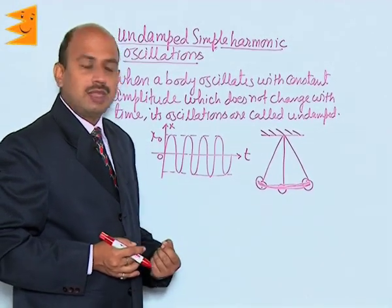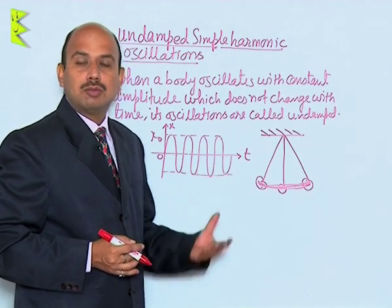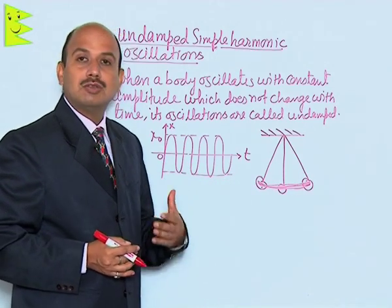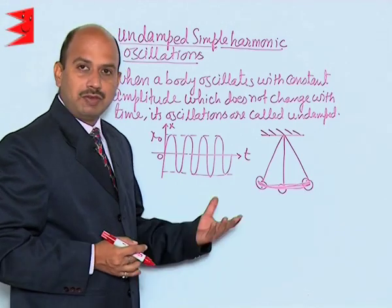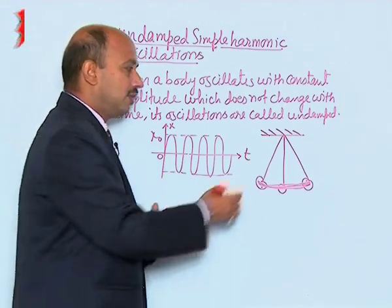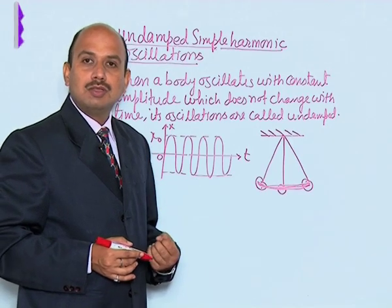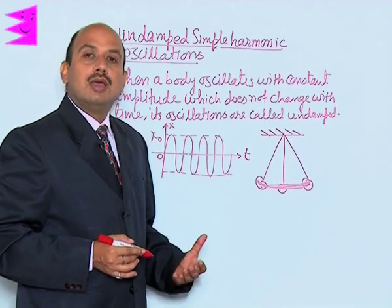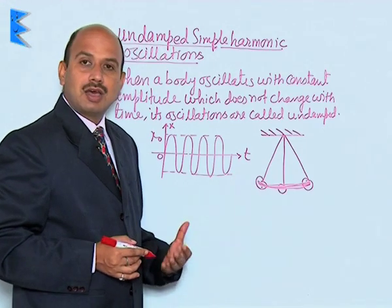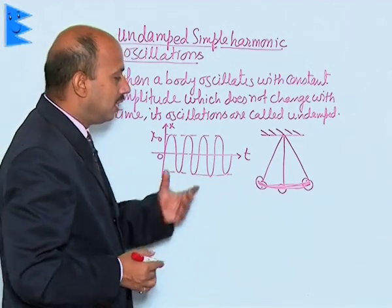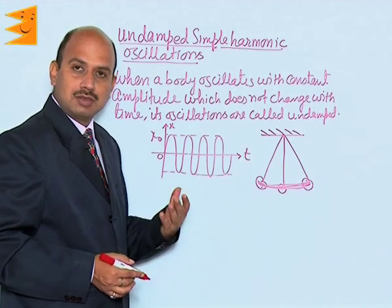This is only possible if there is no force trying to reduce the energy of the oscillating body — meaning there is no friction at the pivot and no air friction. This means if the pendulum is oscillated in vacuum, its oscillations are undamped.